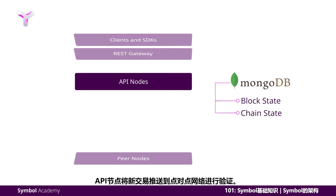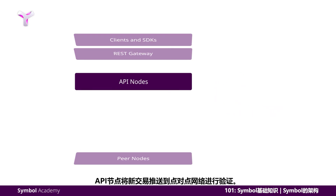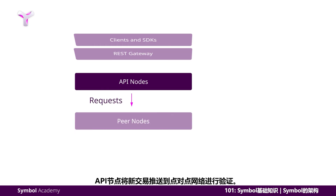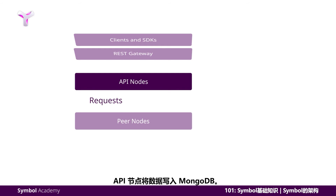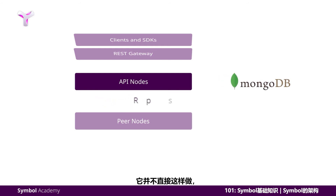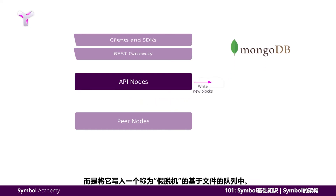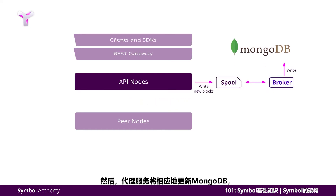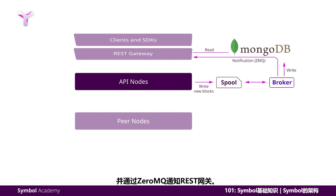The API nodes push new transactions to the peer-to-peer network for validation. After being validated and included in the block, API nodes write data to MongoDB. It does not do it directly, but it writes into a file-based queue called Spool. A broker service will then update MongoDB accordingly and notify the REST gateway via 0MQ.